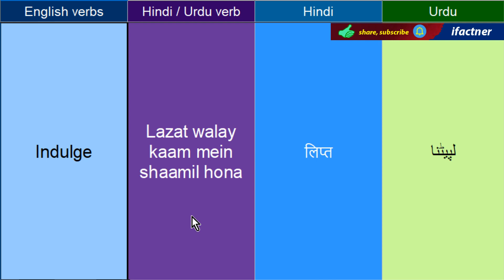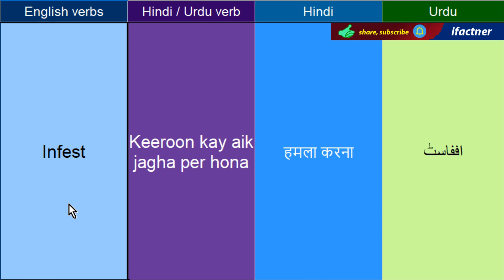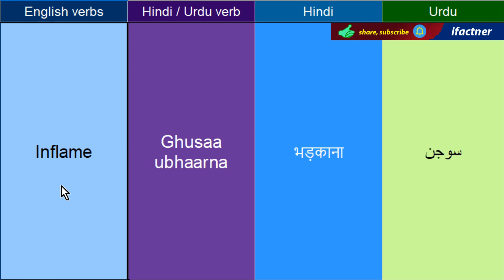Lazzat waale kaam mein shamil hoona — Indulge. Mutasir kerna — Infect. Keeleon ke ek jagha par hoona, kattay hoona — Infest. Kehin peh bohat ziaada koji keelay makauday jamah ho jahein, toh hum usko Infestation kehtay hain.